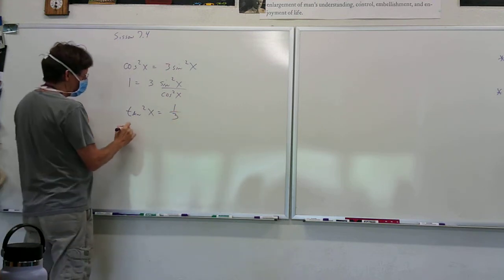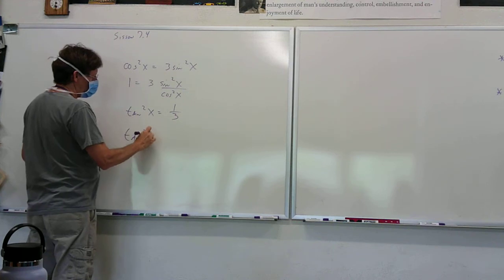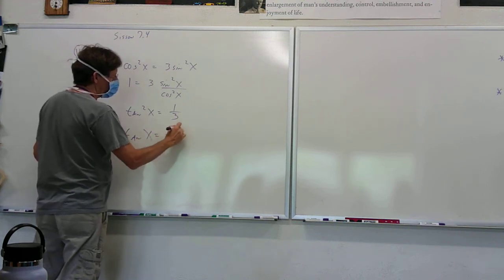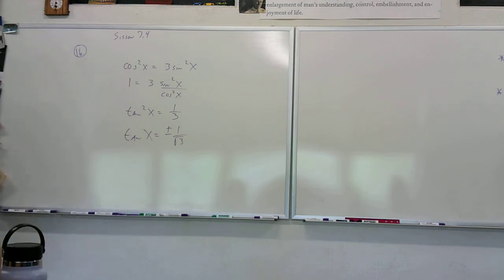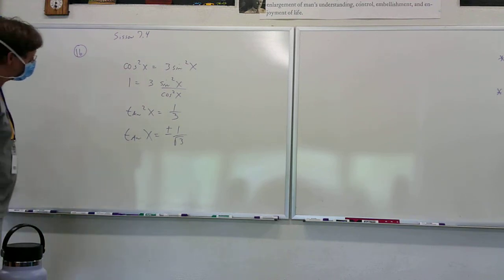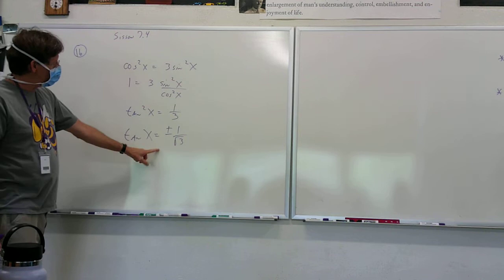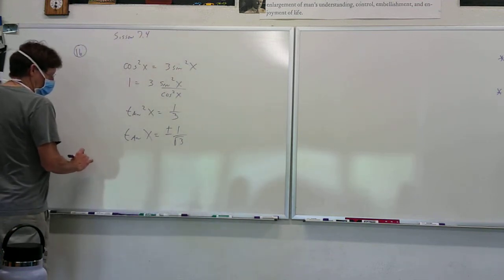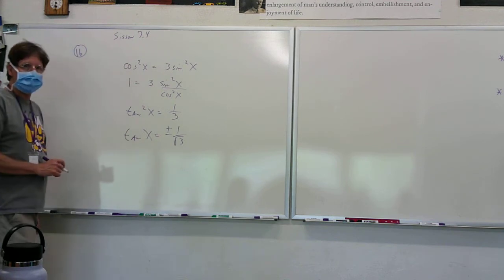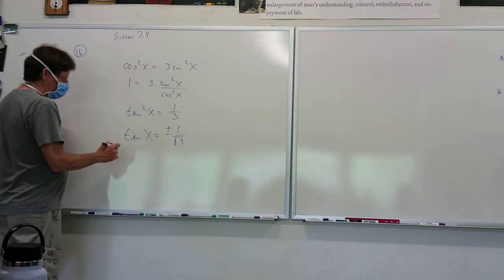So I could get tangent x equals positive or negative 1 over the square root of 3. And as soon as I see that, I can start looking on my unit circle. What would x equal? Positive or negative 1 over the square root of 3 — that's going to be pi over 6.